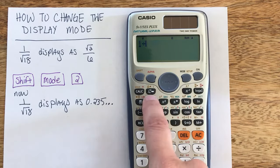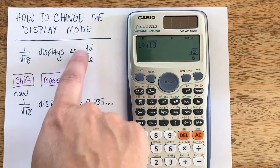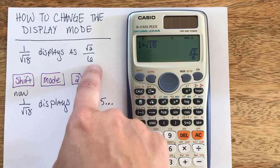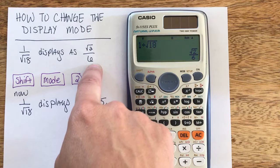so 1 divided by the square root of 18, if you want the display as the square root of 2 over 6, I'll show you how to change it to that if that's what you don't have, but instead if you wanted the decimal value,